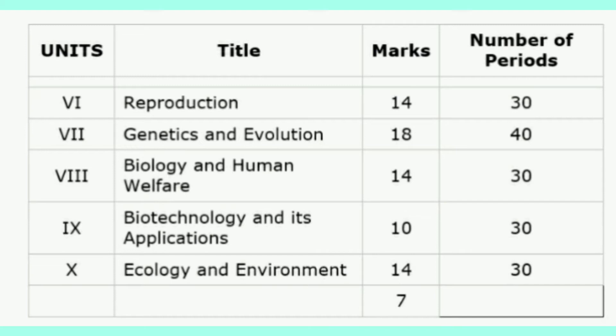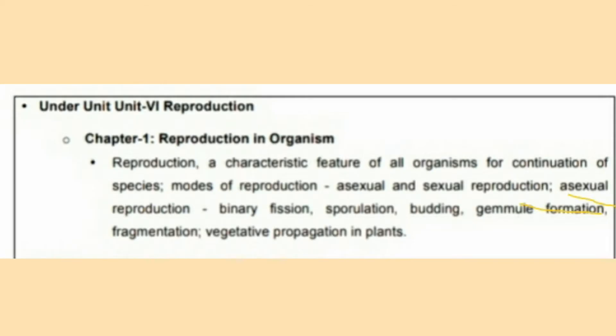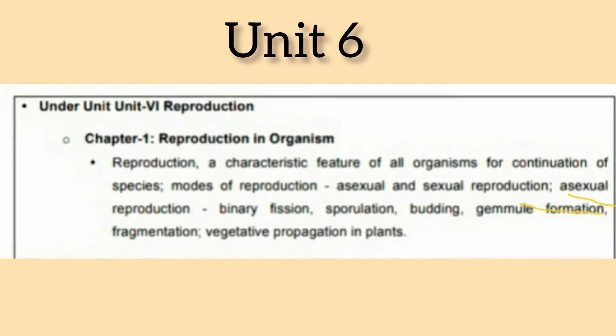Now let me discuss the deletion of chapters from each respective unit. Under unit six, reproduction, chapter one — reproduction in organisms — the basic characteristic features of all organisms for continuation of species, mode of reproduction, asexual reproduction, sexual reproduction, binary fission, and all these topics have been deleted from your NCERT book for this academic session.